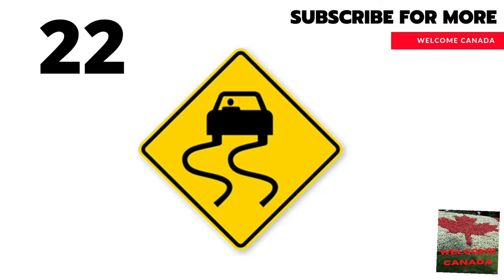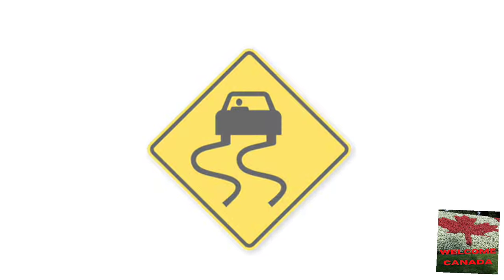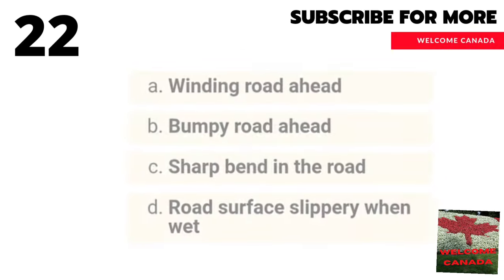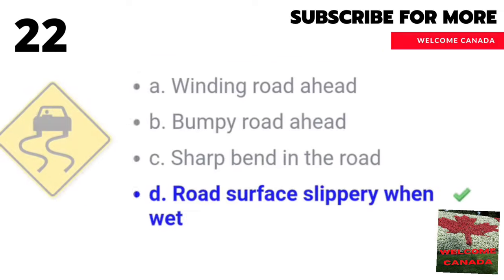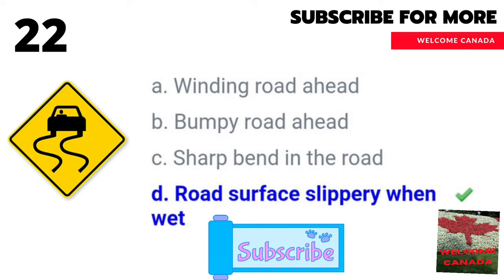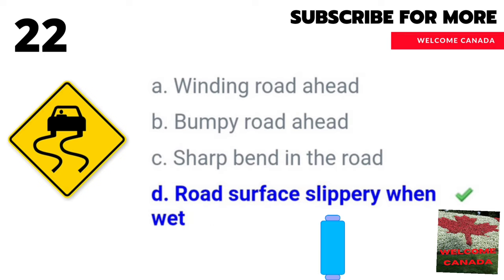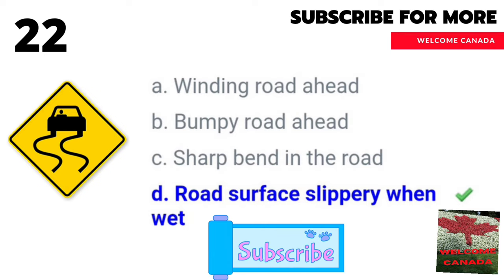If you are planning to move to a new province, you should know this sign. For the twenty-second traffic sign in Canada — choose the right one. The correct answer is D: road surface slippery when wet.